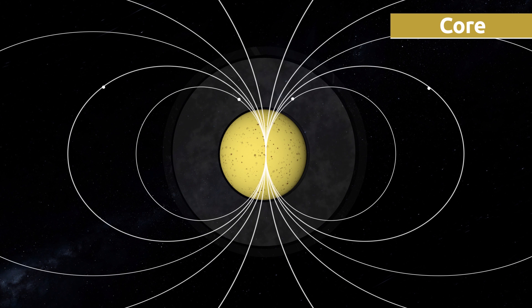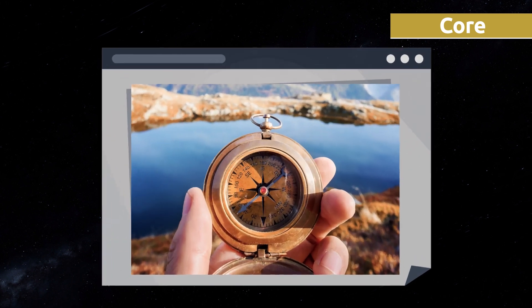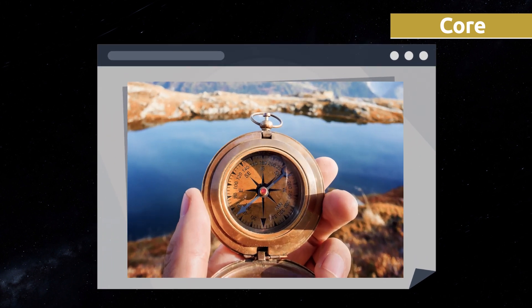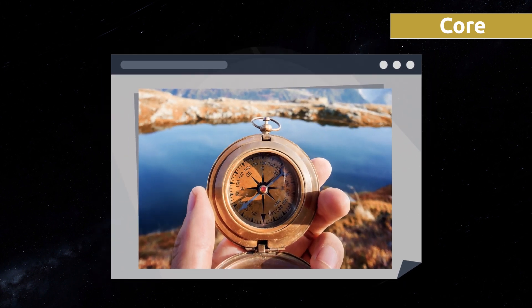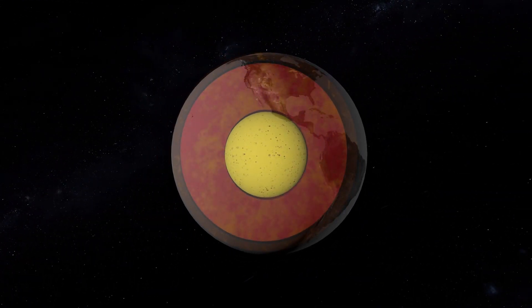The wide ranges of temperature and pressure conditions in the outer core cause the molten metal to move. This results in the formation of electric currents that produce magnetic fields. Thanks to these magnetic fields, we are able to use instruments like the compass.